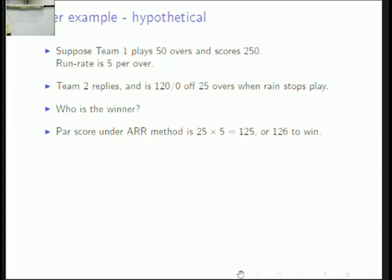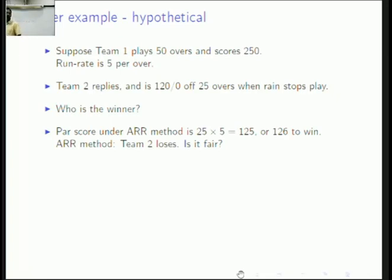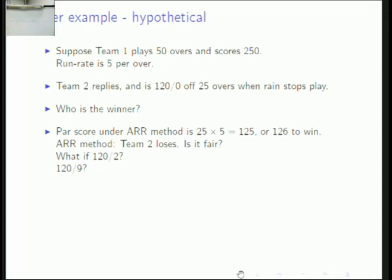All of you said team 2 wins, but according to ARR team 2 loses — and you all agreed that isn't fair. What if it was 120 for 9? Then team 1 should win. So the par score that team 2 must cross should be something smaller when they have no wickets lost, and something higher when they are 120 for 9. How do you come up with what the par score should be?